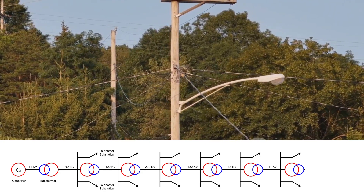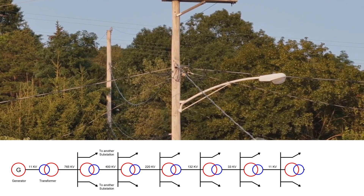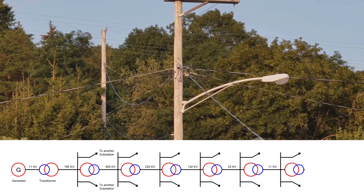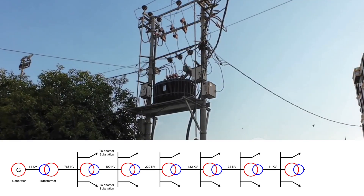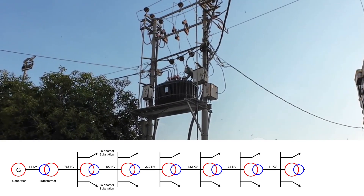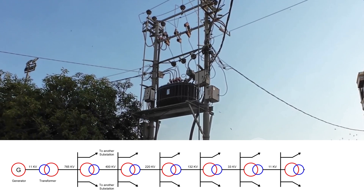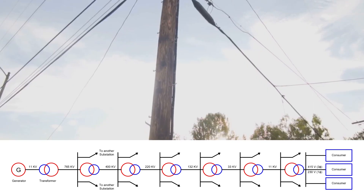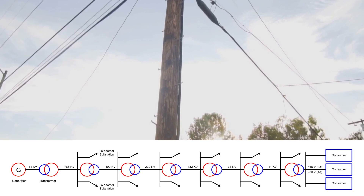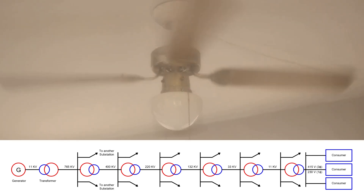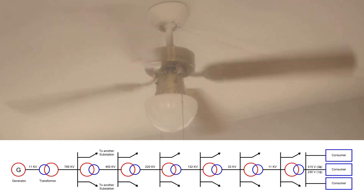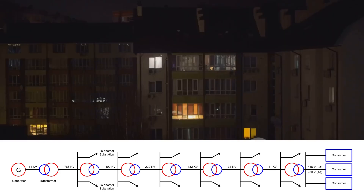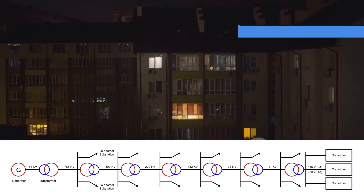Finally, we arrive at the secondary distribution stage — this is where electricity becomes usable in homes and small businesses. From pole-mounted or ground-mounted transformers placed in your neighborhood, the 11 kV supply is stepped down to 400 volts for three-phase systems or 230 volts for single-phase systems. This is the voltage that runs your ceiling fan, charges your phone, powers your kitchen appliances — basically, this is what lights up your home.